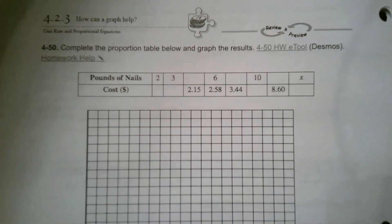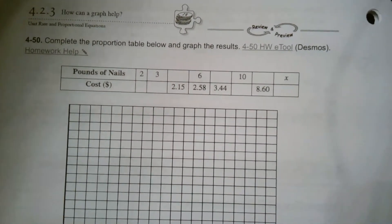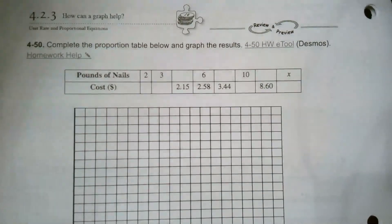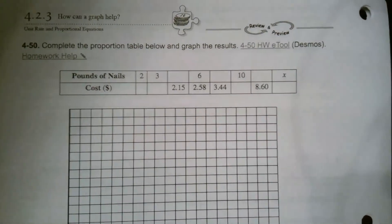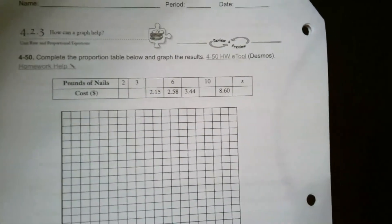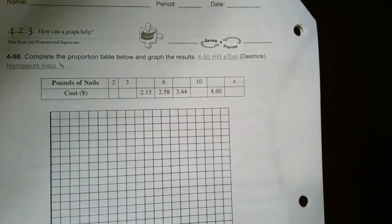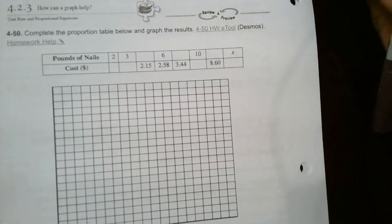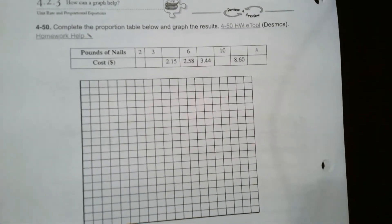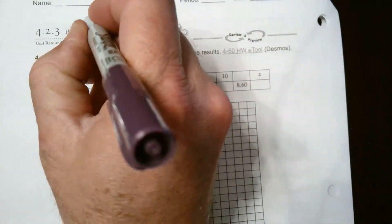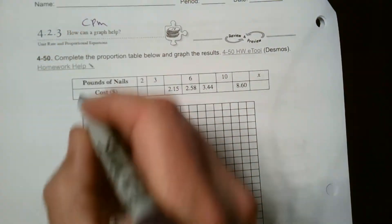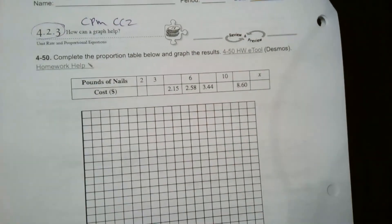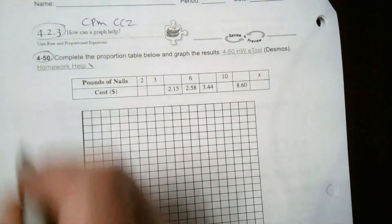Hey folks, Mr. Dell here. We are looking at a problem that has to do with a proportion, given a table, a proportional table, and then graphing the results that we come up with. I'm pulling this question from CPM course two, section 4.2.3, specifically number 4-50.